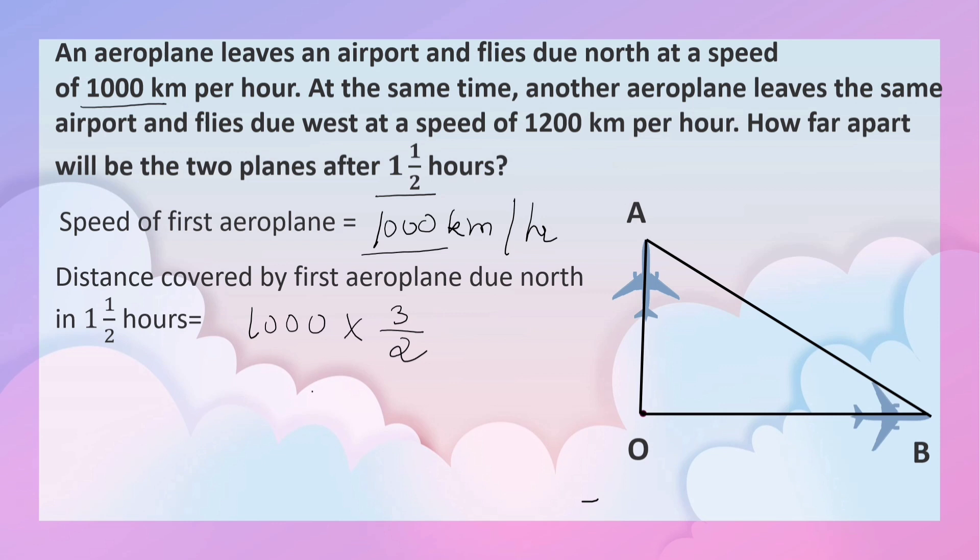2 ones are 2, 500s are 500 times 3 is 1500 km. So OA is 1500 km.